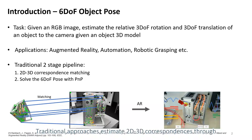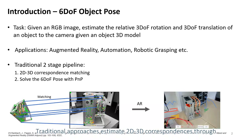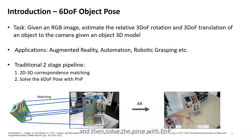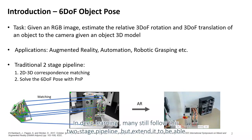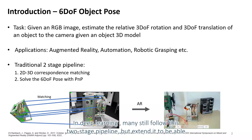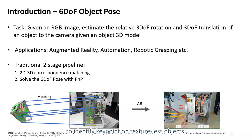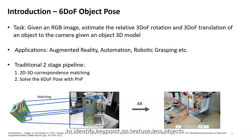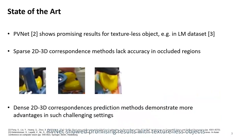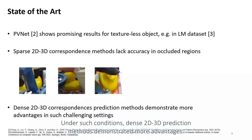Traditional approaches estimate 2D-3D correspondences through keypoint matching and then solve the pose with PnP. In deep learning, many still follow this two-stage pipeline, but extend it to identify keypoints on textureless objects. PVNet showed promising results with textureless objects, but still lacks accuracy in occlusion cases. Under such conditions, dense 2D-3D prediction methods demonstrated more advantages.